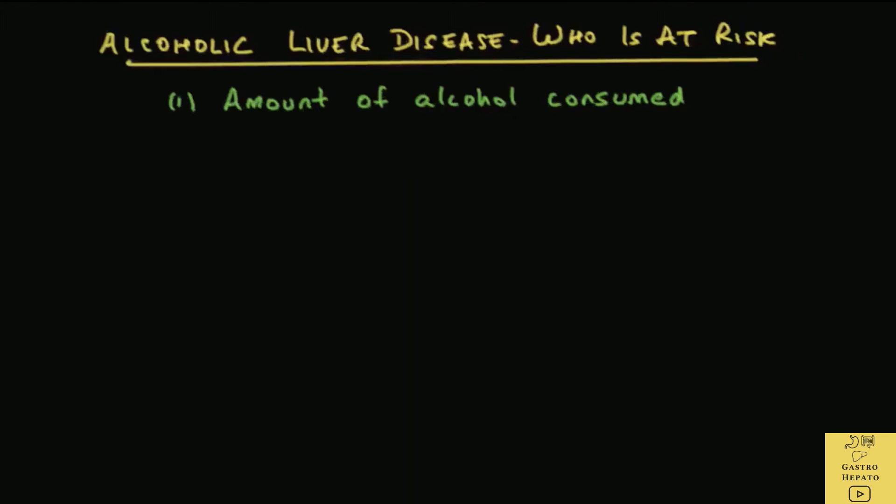Amount of alcohol consumed is probably the most important predictor of developing alcoholic liver disease. Although alcohol consumption is necessary to develop alcoholic liver disease, not all patients who consume alcohol excessively develop it. It is estimated that only up to 1 in 3 develop alcoholic hepatitis and 1 in 5 develop cirrhosis. There are additional factors that increase the risk of alcoholic liver disease.